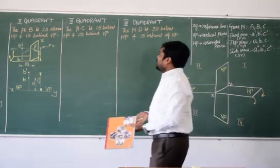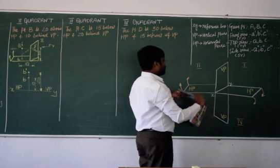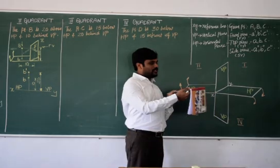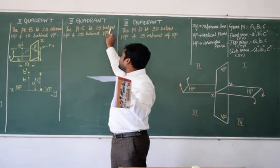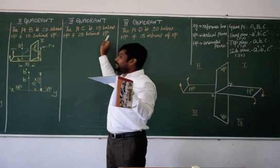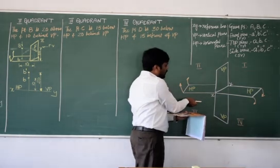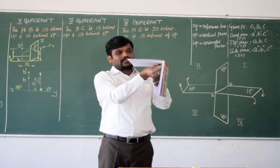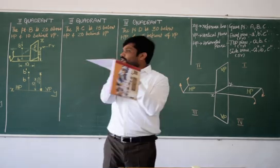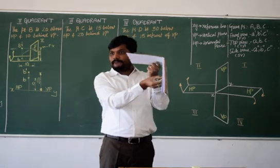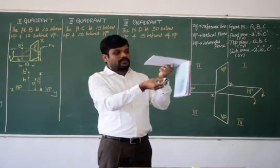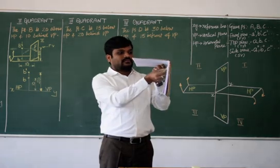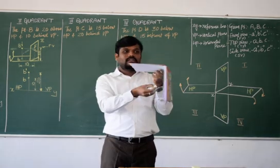Now, let's look into the third quadrant. This is our third quadrant. Point C — third quadrant position — point C is 15 below HP and 20 behind VP. Your point is situated between these two planes, at distances of 15 and 20.